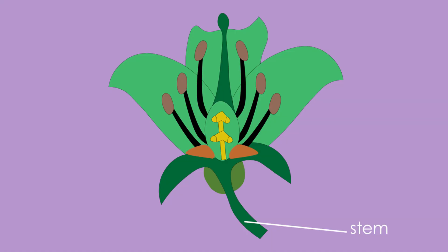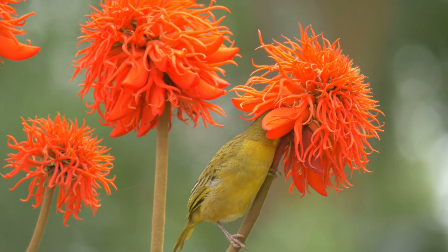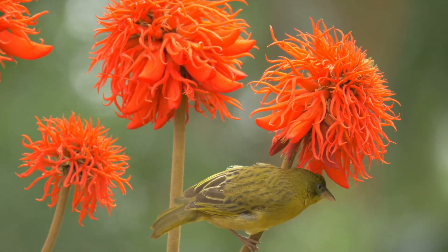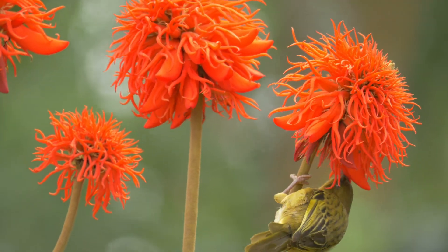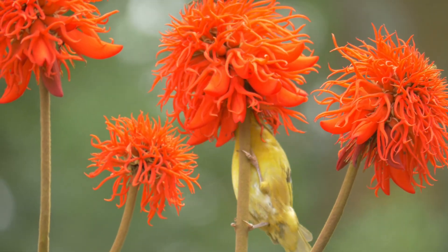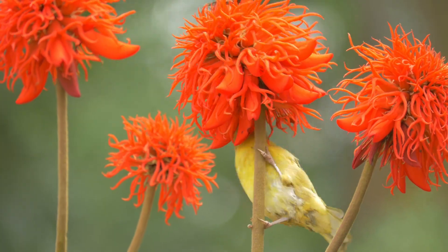Here is the stem. The stem of a flower is the part that supports the flower and connects it to the rest of the plant. It holds up the flower so it can reach sunlight and be more easily seen by pollinators like bees and butterflies. The stem also carries water and nutrients from the roots to the flower and other parts of the plant.